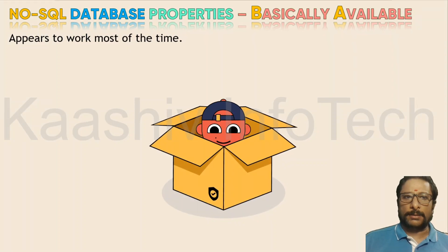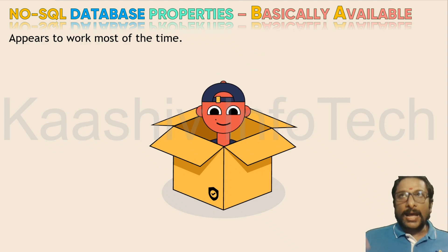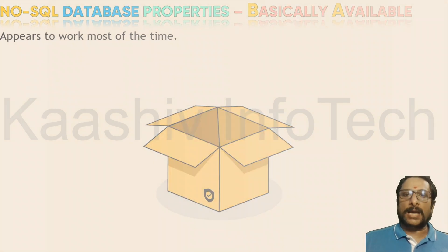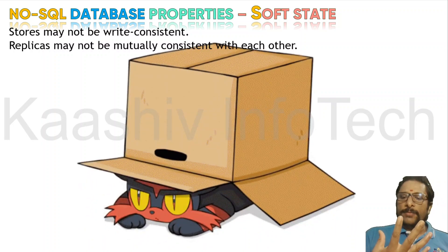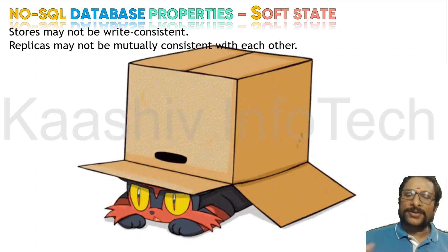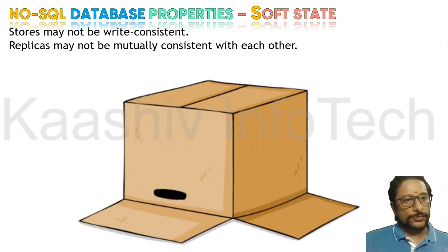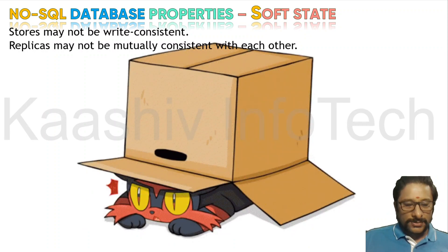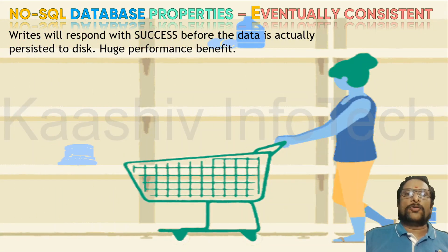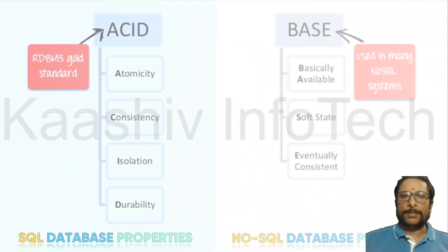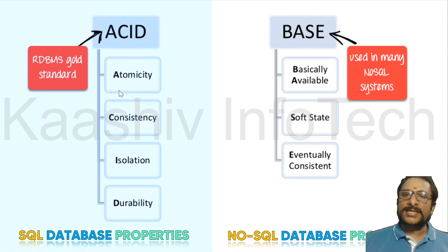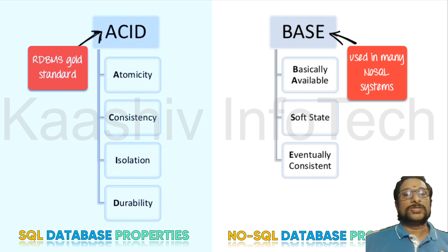NoSQL databases have some basic properties. First, Basically Available — the data is available at all times. Second, Soft State — if you are trying to write data and get a confirmation but the data is not yet written, don't worry, it will be written for sure. The system will take care of replication. Third, Eventually Consistent — even if the data is not yet written to disk and you get a success message, it will be written. These three properties — Basically Available, Soft State, and Eventually Consistent — contrast with a normal database's ACID properties: Atomicity, Consistency, Isolation, and Durability.